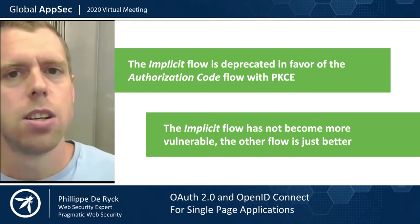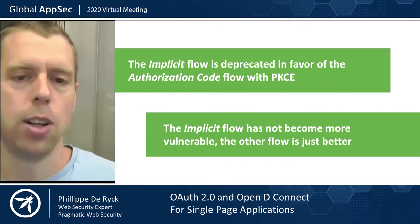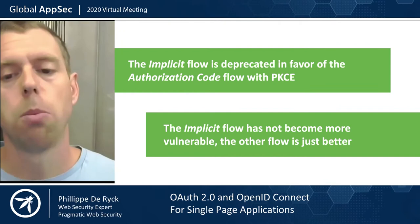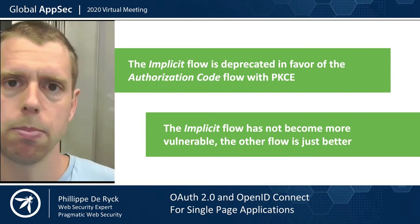In practice, if you're building a new application, use the authorization code flow with PKCE for any front end web application as an OAuth client. If you're working on an existing application that already has an implementation of the implicit flow, you don't need to panic — you're still okay to use that. But you should put upgrading to the authorization code flow with PKCE on the roadmap for one of the coming months. That's the recommended best practice today.